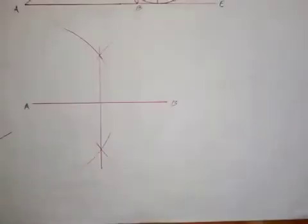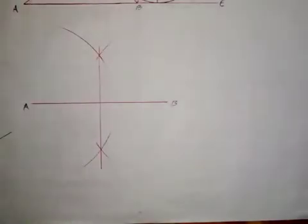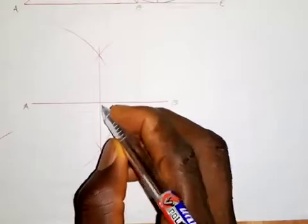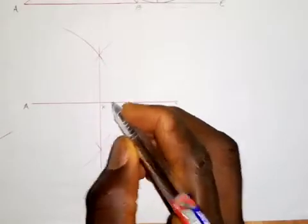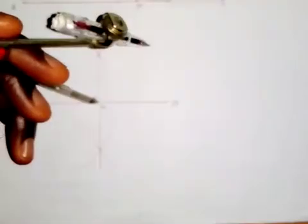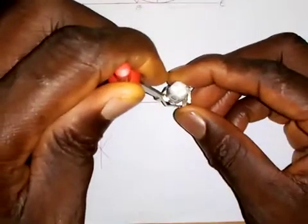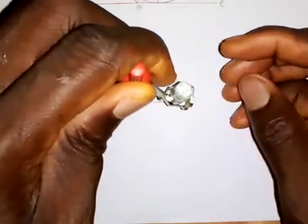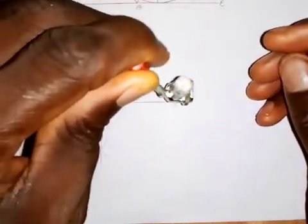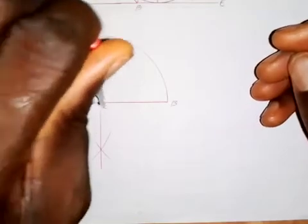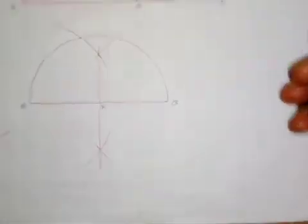So this bisector meets line AB at a point which I will call point X. The next thing I'm going to do is to draw a semicircle, putting the pin point on my compass at X, extending it to B, then I draw a semicircle like this.